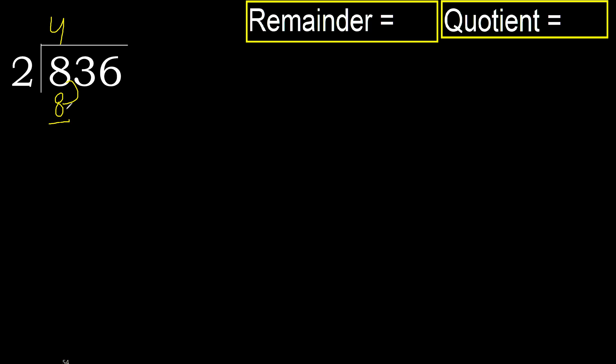Subtract. 8 minus 8 is 0. Next — eliminate. 0. Next digit: 3.